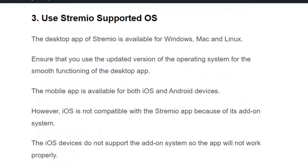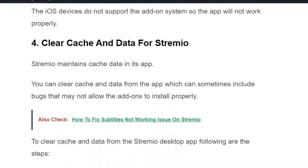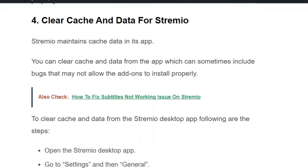Solution number three: use a Streamio-supported OS. Ensure that you are using an updated version of the operating system for smooth functioning of the desktop app. The mobile app is available for both iOS and Android; however, iOS is not supported with Streamio because of its addon system, so iOS devices do not support the addon system and the app will not work properly.